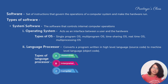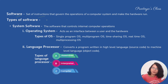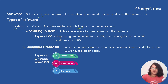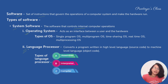Now let's understand what is software. Software is a set of instructions used for the smooth functioning of the computer. The types of software are system software and application software. System software controls the internal operations of the computer. There are two types of system software: the operating system and the language processor.